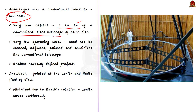A conventional glass telescope mirror needs to be cleaned, adjusted, polished, and aluminized — meaning an aluminum film is deposited on the glass. These requirements are absent in the case of a liquid mirror telescope, so it is also cheaper to maintain. This low-cost advantage also allows it to be dedicated to a narrowly defined project, which is impractical with conventional telescopes as they are expensive.